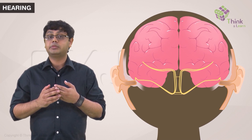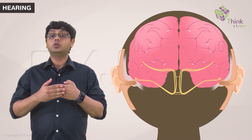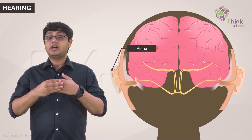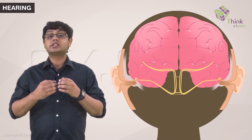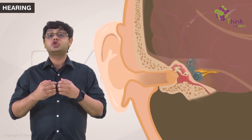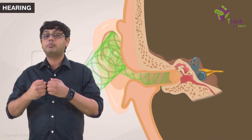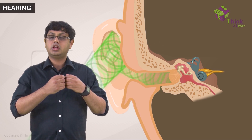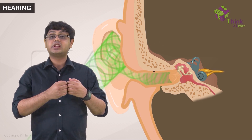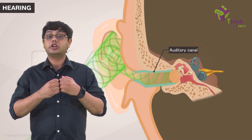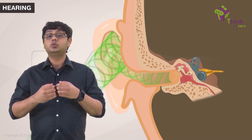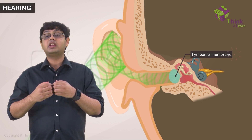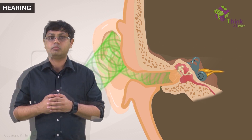Now, when we hear something, these sound waves are collected by our pinna. The pinna serves as a funnel which not only collects these waves but filters and amplifies them a little bit. The sound waves then enter the auditory canal, where it passes through the canal and hits the tympanic membrane or eardrum.